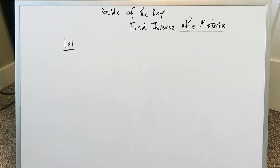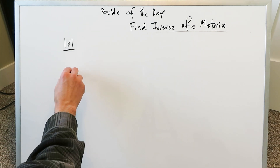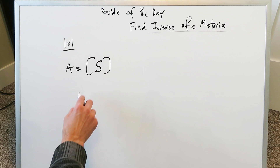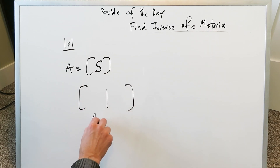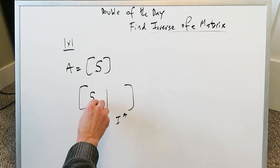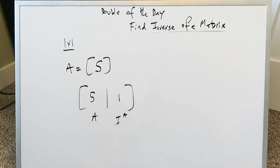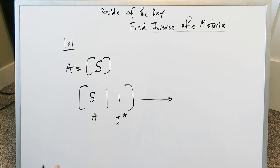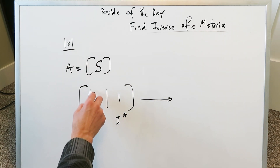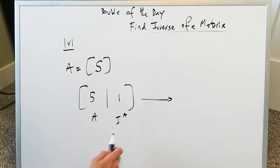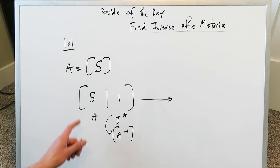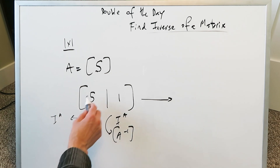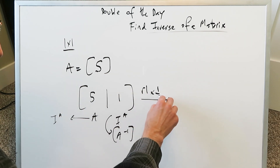If you have a one by one matrix and you want to determine its inverse, it's the easiest thing you can do. Imagine you have an A matrix with the number five in it. You want to find the inverse of that. You set it up into this form — you put your A over here and your identity matrix here. You have a five, and the identity matrix for a one by one is always a one. What you want to do is get a one over here by doing row manipulation — multiply row one by one over five.